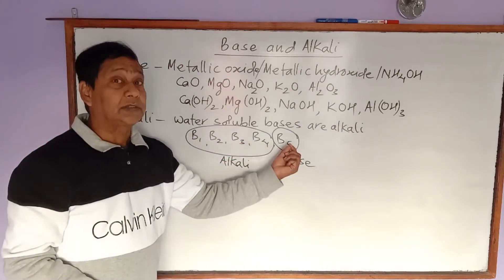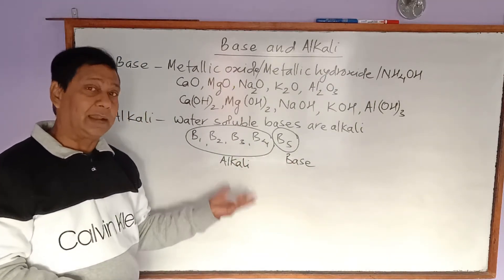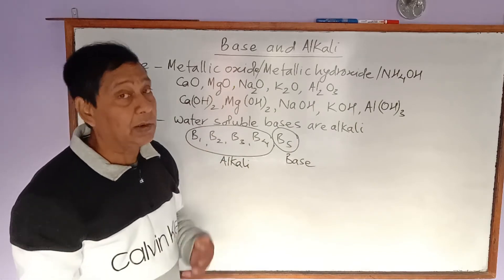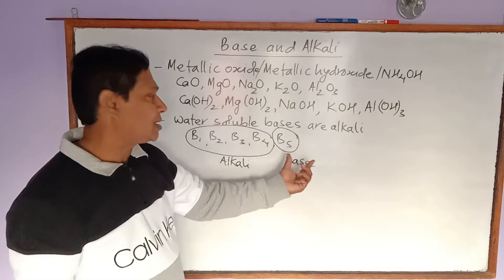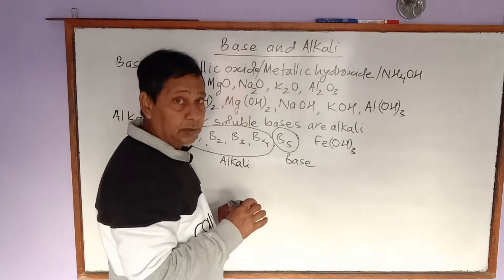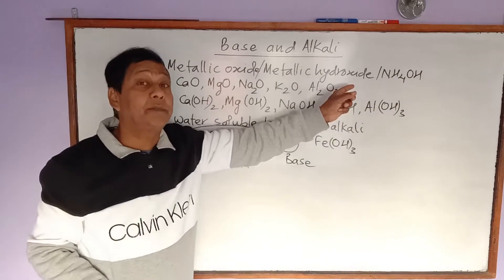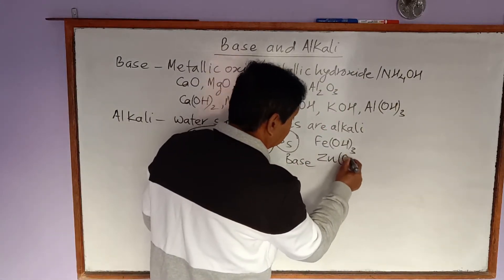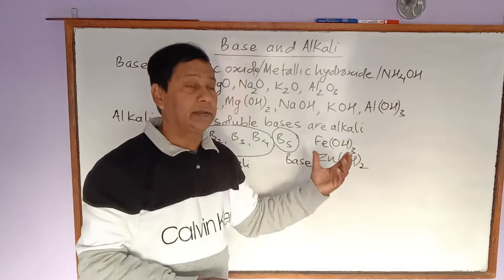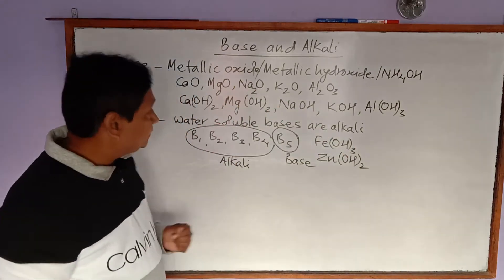If a metallic oxide or hydroxide dissolves in water, it is a base plus a water-soluble base — that is, an alkali. But if it doesn't dissolve in water, it is a base only. For example, ferric hydroxide and zinc hydroxide — both are metallic hydroxides and therefore bases — but they do not dissolve in water, so they are water-insoluble bases and are not alkalis.